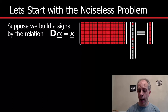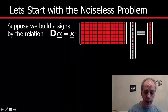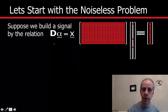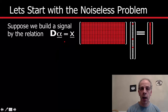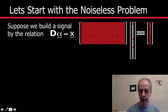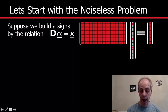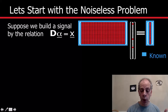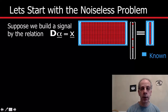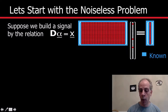Assume that we have just produced a signal x as a sparse model. Assume that we know a dictionary D, and we randomly pick an alpha with a few non-zero coefficients and generate x. Our goal is to find back this alpha. So we know the dictionary, we know the signal, and we want to compute its sparse representation. That's our goal right now.